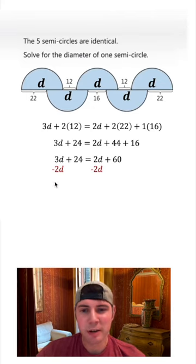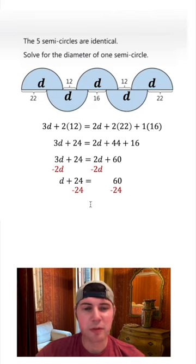Subtract 2d from both sides. We get a single d plus 24 equals 60, and then subtract 24 from both sides and we get d equals 60 minus 24, which is 36.